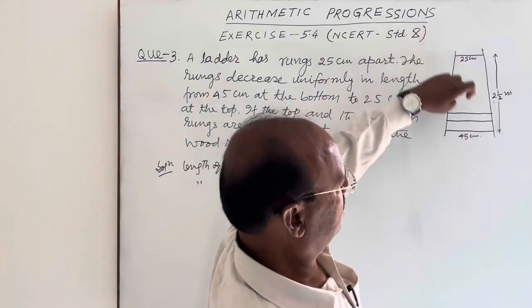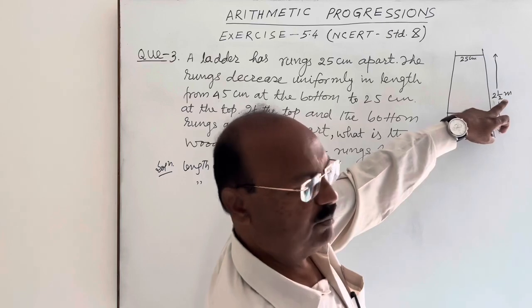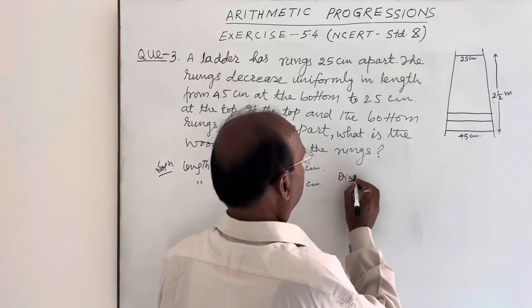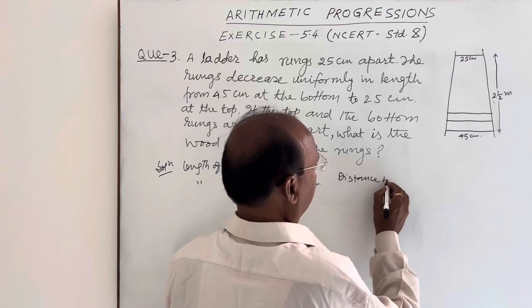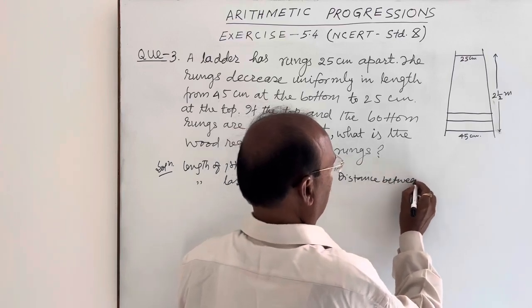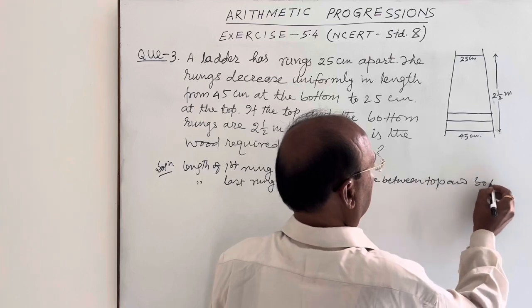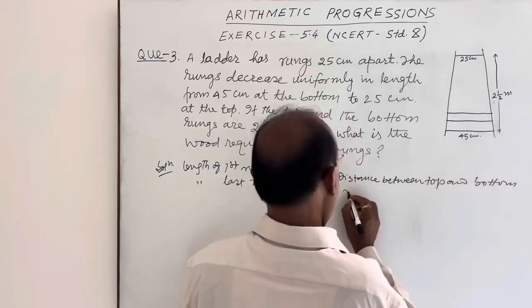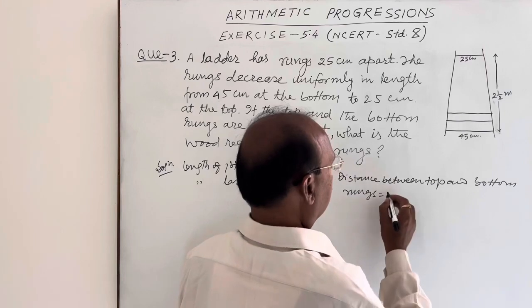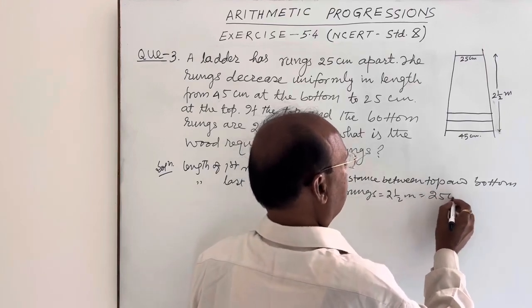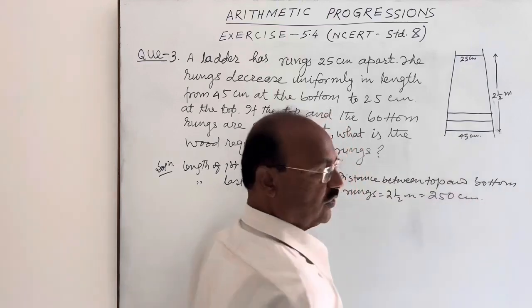Distance between first and last rungs is two and half meter. Distance between top and bottom rungs is equal to two and half meter is equal to 250 cm.